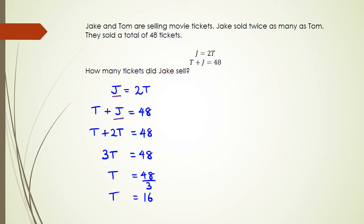But if you look at the question it actually says how many tickets did Jake sell. What we figured out is what Tom sells. Tom is selling 16 and Jake is 2 times t. So which is 2 times 16 and that's going to be 32. So a little statement, Jake sells 32 tickets. All right, and that's how you answer this question.